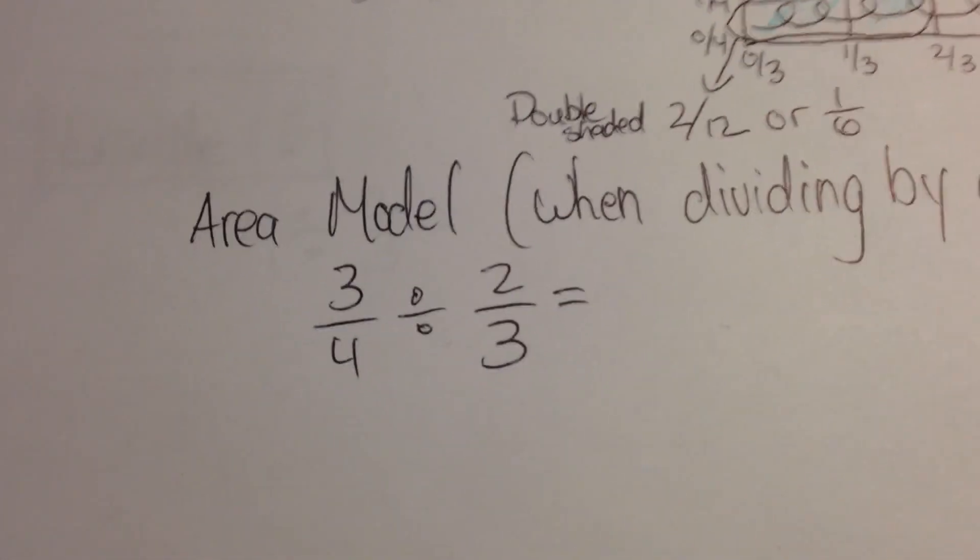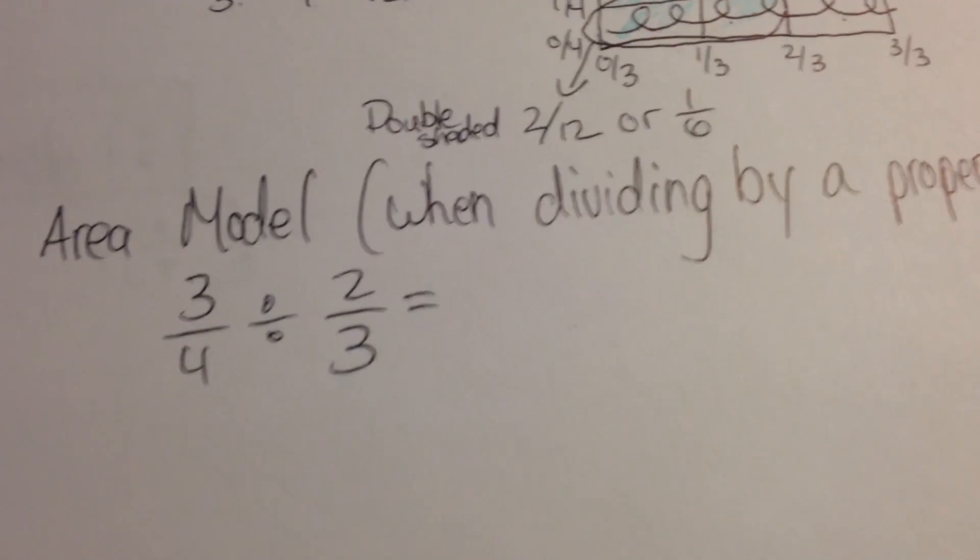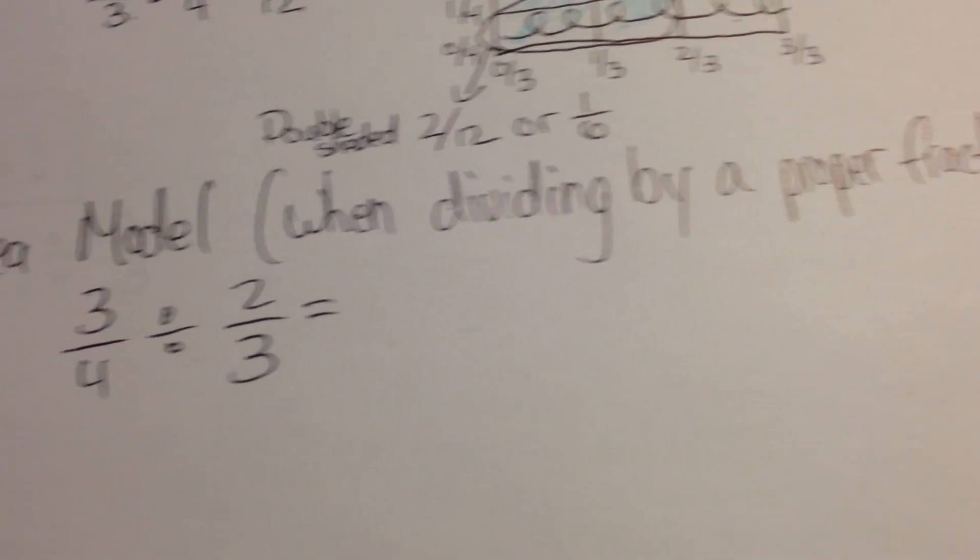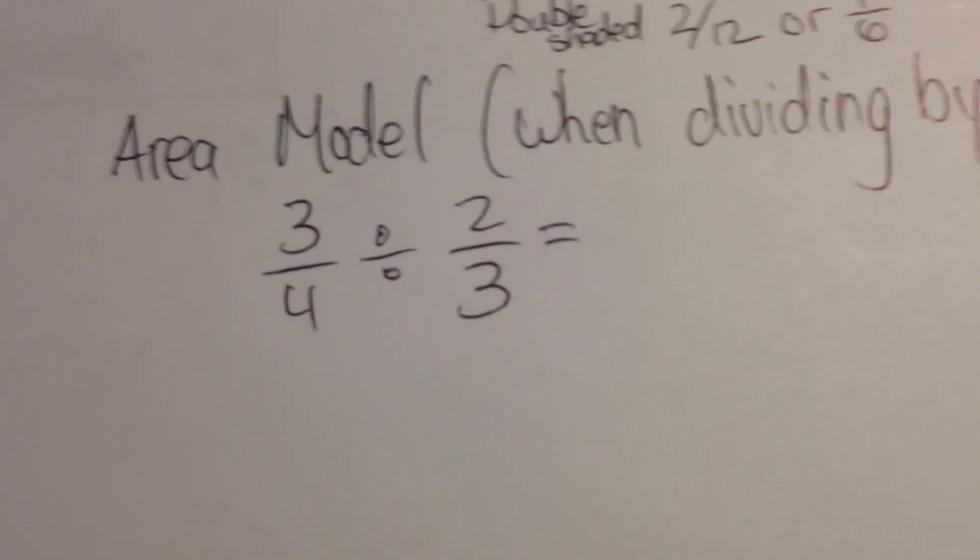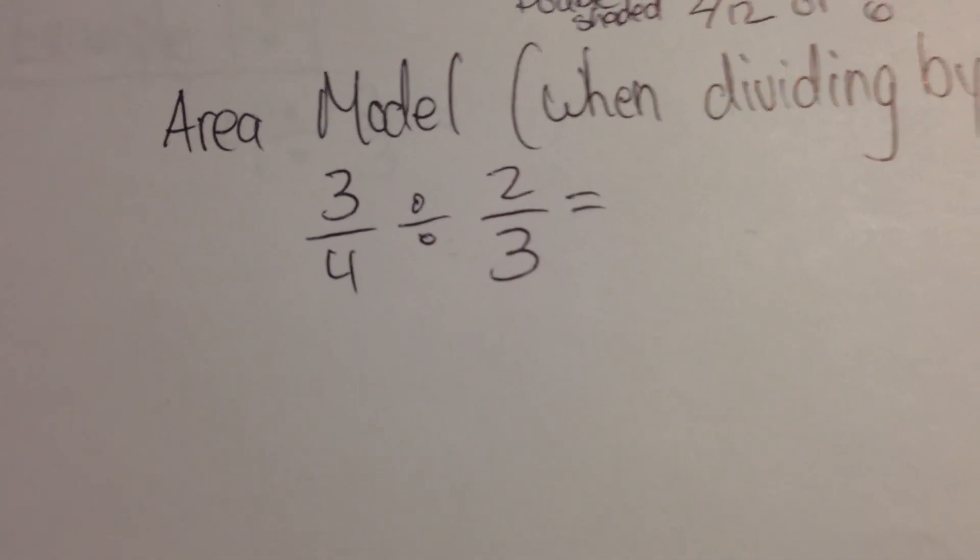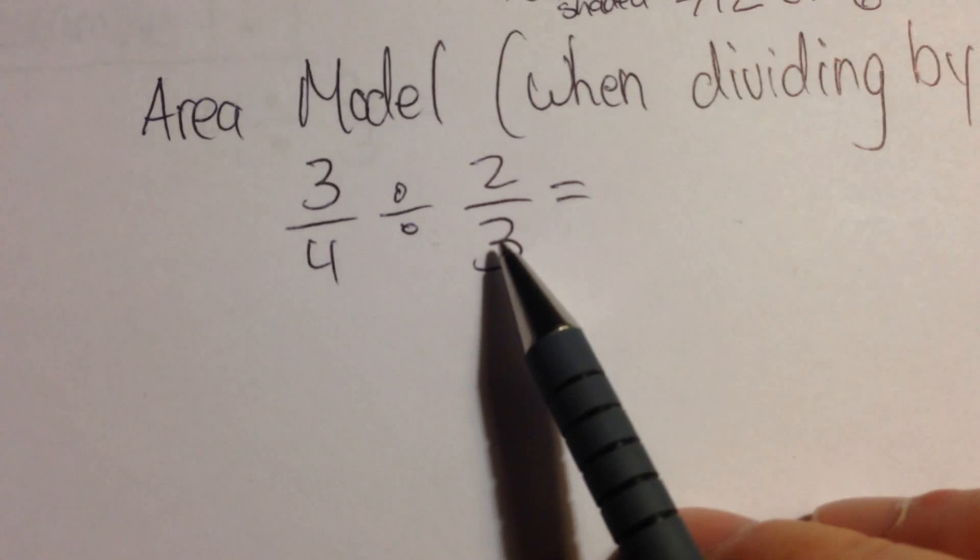Here's a second example of the area model, and this one's actually when you divide by a proper fraction. This is actually a little bit tougher. I actually think the area model is one of the harder ones to draw, especially this one.